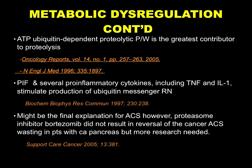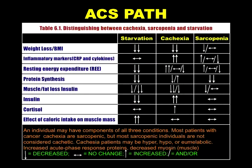In summary, looking at differences between starvation, cachexia, and sarcopenia: BMI is going down in both starvation and cachexia, so to an ordinary eye they appear the same. But inflammatory markers — cytokines, acute phase reactants like C-reactive protein — are quite flat and not really increasing in starvation, whereas in cachexia they are in full swing and going upwards.